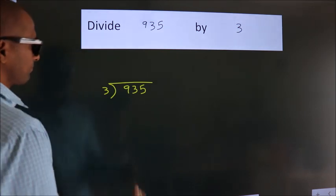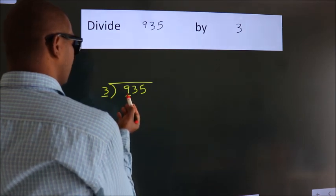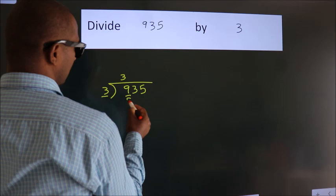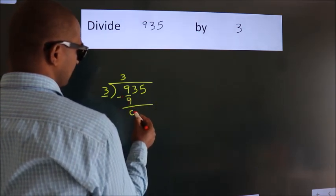Next, here we have 9, here 3. When do we get 9? In 3 table, 3 times 3 is 9. Now we should subtract, we get 0.